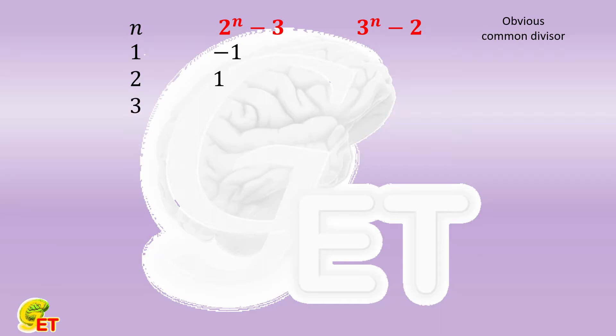n is equal to 3. 2 to the nth power minus 3 is equal to 5, and 3 to the nth power minus 2 is equal to 25. They have an obvious common divisor, which is 5. So they are not co-prime.